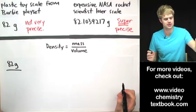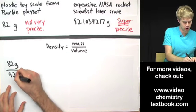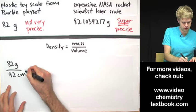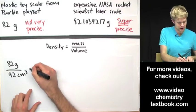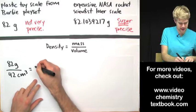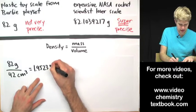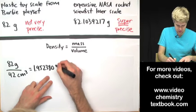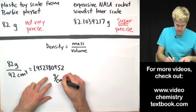So maybe I'll use a graduated cylinder also from the Barbie playset and find out that the volume of the rock is 82 cubic centimeters. I do this math and the answer that I get is 1.952380952 grams per cubic centimeter.